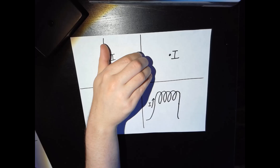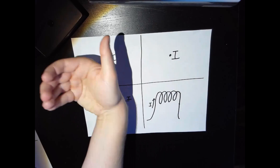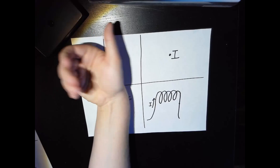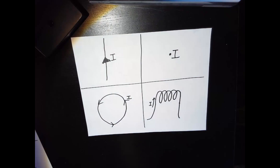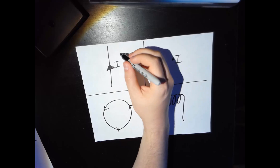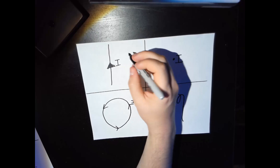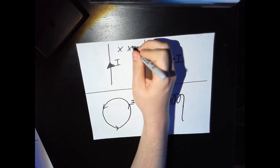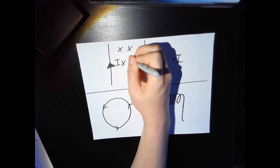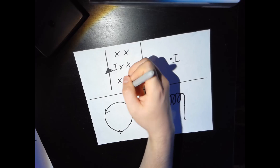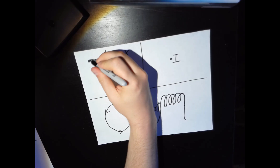When I hold my thumb up, the curl is coming out of the page. So that means that for the induced magnetic field, on the right-hand side it's going into the page, and on the left-hand side it's coming out of the page.